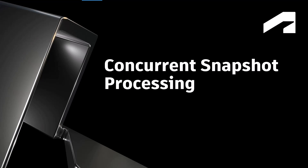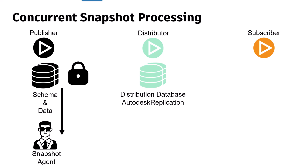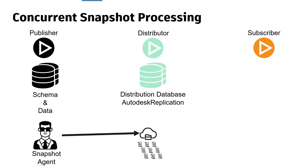Concurrent snapshot processing. Snapshot replication can place shared locks on all tables published as part of replication for the duration of snapshot generation, which can prevent updates from being made on the publishing tables. Autodesk Vault uses concurrent snapshot processing, so no locks are placed on any table during snapshot generation, allowing users to continue working uninterrupted while replication creates initial snapshot files.